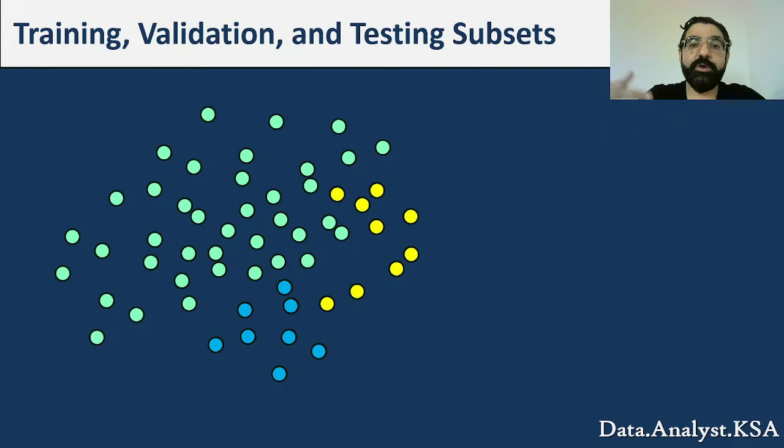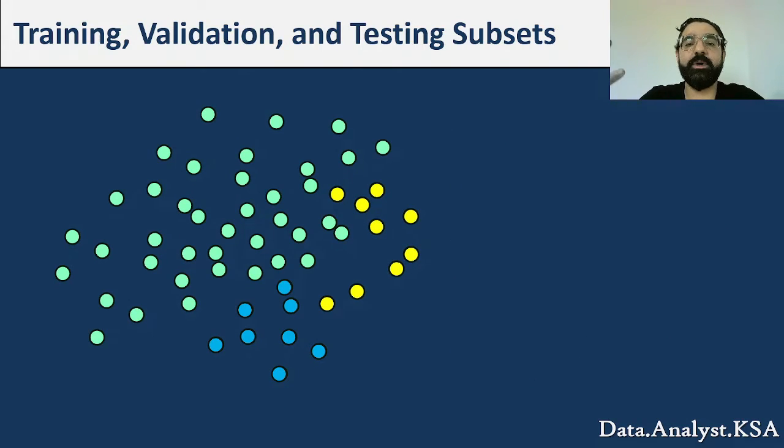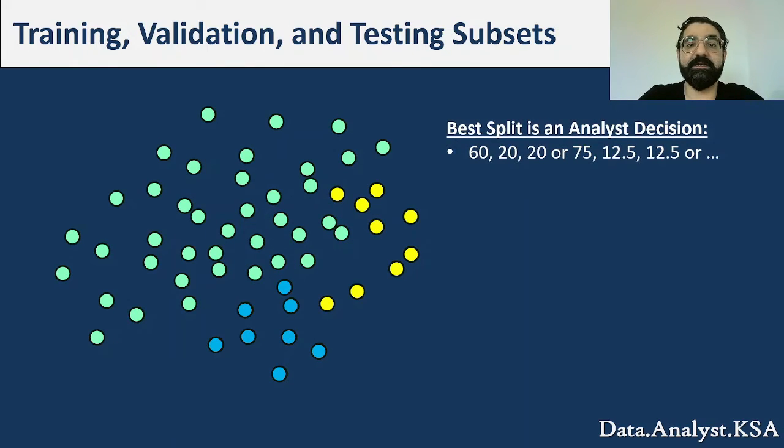So now a question might be coming to mind: what is the best split? Basically I have, let's say, 100% of my data initially. What is the best split I can do? Well, this question is subjective. So you can split it 60%, 20%, 20% for training, validation, and testing. You can do 75%, 12.5%, 12.5%.